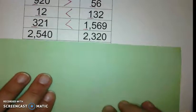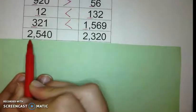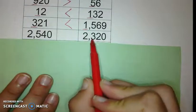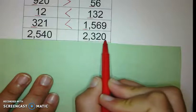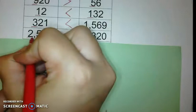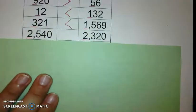All right, last one we're going to do. 2540 compared to 2320. First thing is find the highest place value, which for both of these is the thousands.